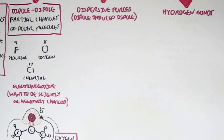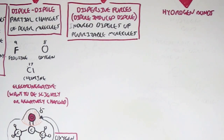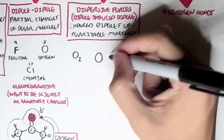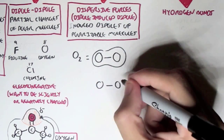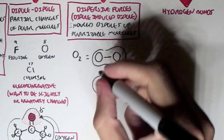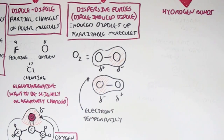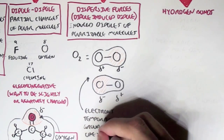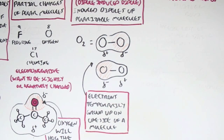The dispersive forces, also known as dipole-induced dipole or London forces, involve dipoles of polarizable molecules. At any given moment, electrons may be found more on one side of a molecule than the other, creating a temporary charge. For example, in oxygen gas (O2), electrons can temporarily group on one side, making it a polarizable molecule. These temporary charges attract opposite charges, forming a weak-to-moderate temporary bond between molecules.